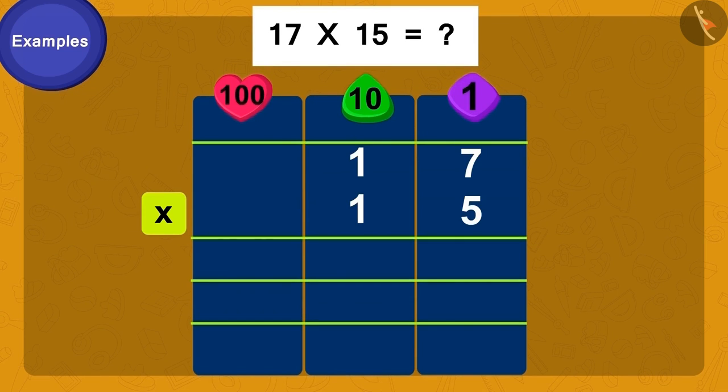Now, we will multiply 5 of 15 by 7 of 17. Did you get it? 35. Can we write both the digits of 35 as a single digit number? No.